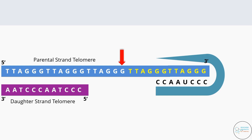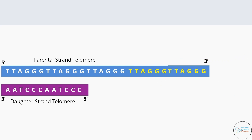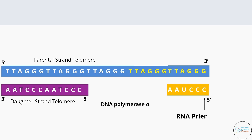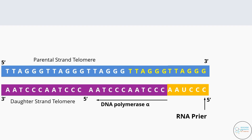Once telomerase leaves the parental chromosome end, on the daughter strand an RNA primer is loaded against the 3 prime end of the parental strand. DNA polymerase alpha, which carries DNA primase as one of its subunits, recognizes the 3 prime OH of the RNA primer and fills the gap by adding corresponding nucleotides. In this way we get a daughter DNA of the same length as the parental DNA, with no loss of genes — and thus the original information at the ends of the linear chromosome is completely copied in the new DNA.